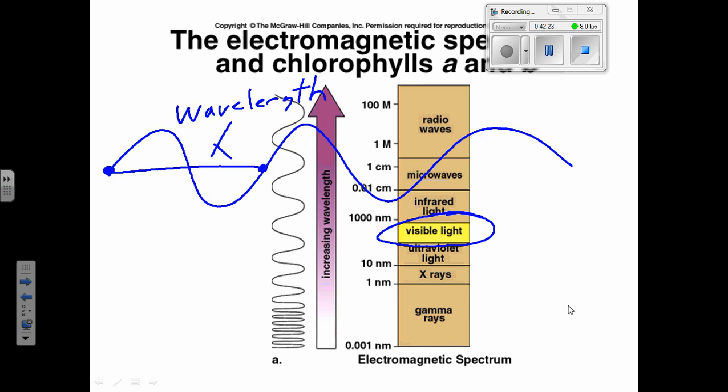The amount of energy in a wave of light is directly proportional to its frequency. High frequency means high energy. Radio waves have very low frequency, so when one bumps into you, nothing happens. But at the other end of the spectrum, gamma rays have extremely high frequency and therefore crazy amounts of energy — they can go straight through you, frying your insides and mutating your DNA.